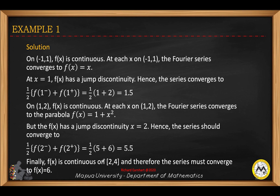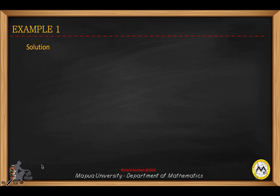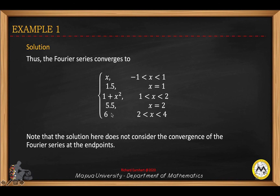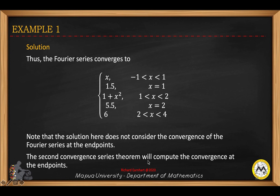To summarize: the Fourier series converges to x from negative 1 to 1; at x equals 1 it converges to 1.5; on the interval 1 to 2 it converges to the parabola 1 plus x squared; at x equals 2 it converges to 5.5; and on the interval 2 to 4 it converges to the constant 6. Note that this solution does not consider convergence at the endpoints. The second convergence theorem addresses convergence at endpoints, so you may explore that topic, which is also related to the first convergence theorem.